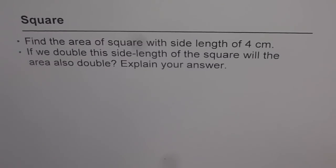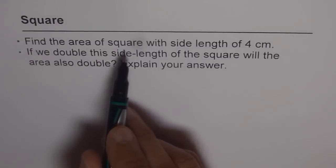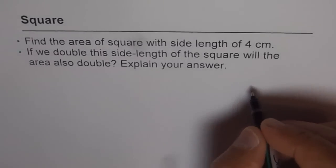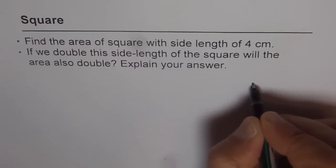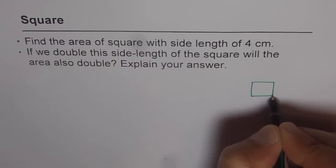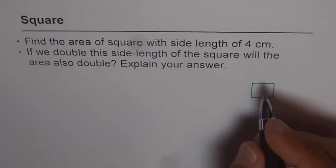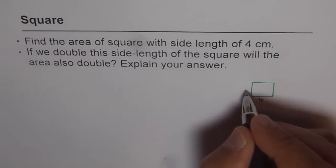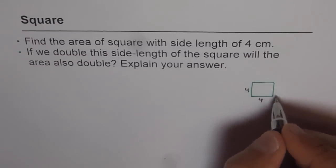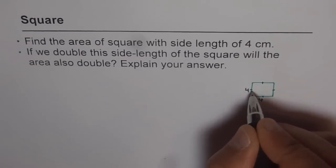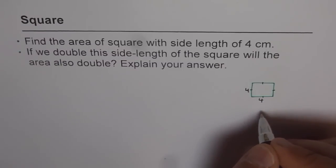So let us do the first question first: find the area of square with side length of 4 cm. Let me make a square here. This is my square and the side length is 4 cm. I'm just writing 4 here for each side. All 4 sides will be 4 units. All sides of a square are always equal. If I make like this, it means all are equal sides.